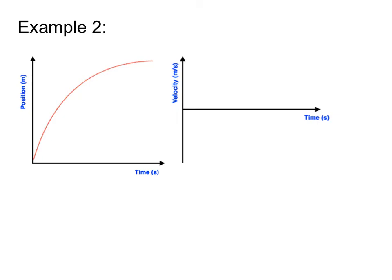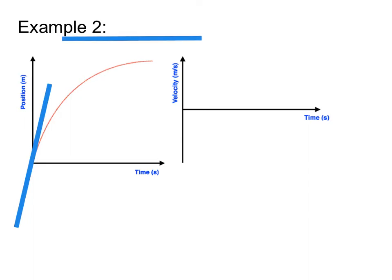Next up, I've got a position versus time graph that looks like this, and we're going to go a bit faster on these. I want to look at the tangent line when the time is zero, and draw the tangent line that goes with this. I've also got a tangent line at the end. So we want to make a velocity-time graph using these two tangent lines. At this point we should be comfortable drawing a tangent line at the beginning and end of an object's motion.